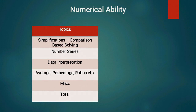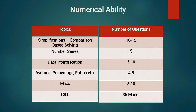इसके बाद Numerical Ability पर आते हैं। यह clerical या assistant level का exam है, इसलिए Simplification और calculation-based questions ज़्यादा मिलेंगे — लगभग 10-15 questions। पिछले 2 सालों से एक trend देखा है कि comparison-based questions होते हैं जहाँ X और Y की values निकालकर comparison करना होता है। इसके अलावा Number Series लगभग 5 marks, Data Interpretation 5-10 questions (2 sets possible, लगभग 10 marks), और Averages, Percentage, Profit & Loss, Ratio & Proportions भी important topics हैं।